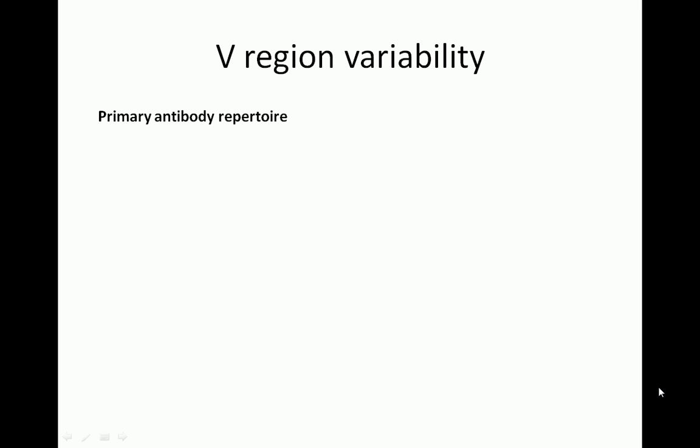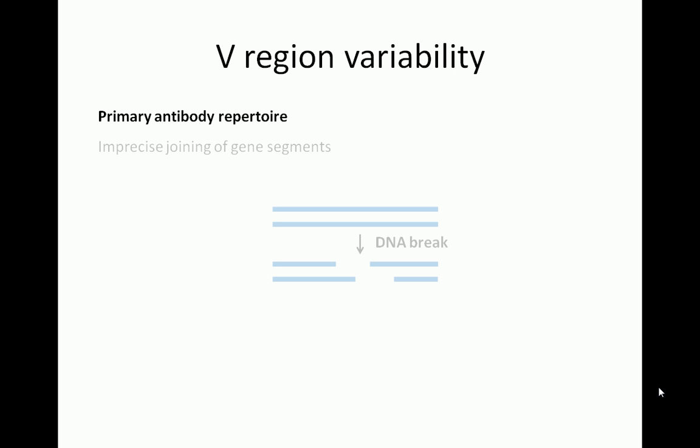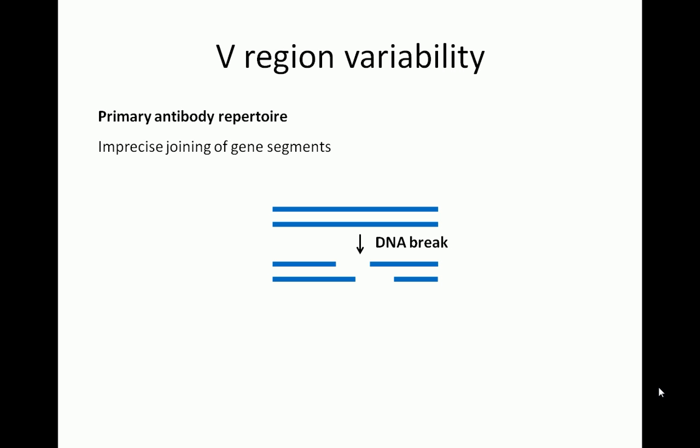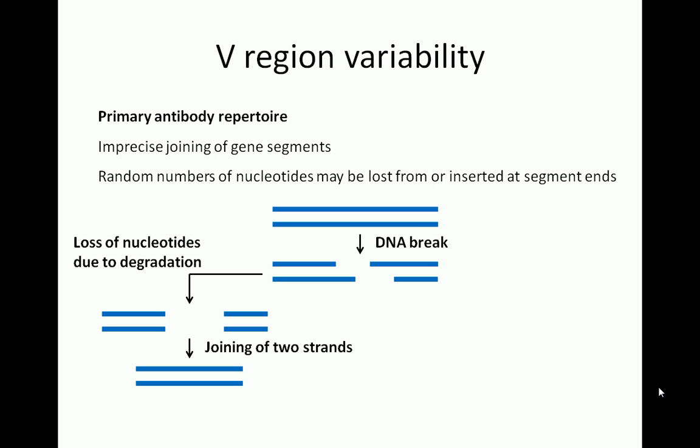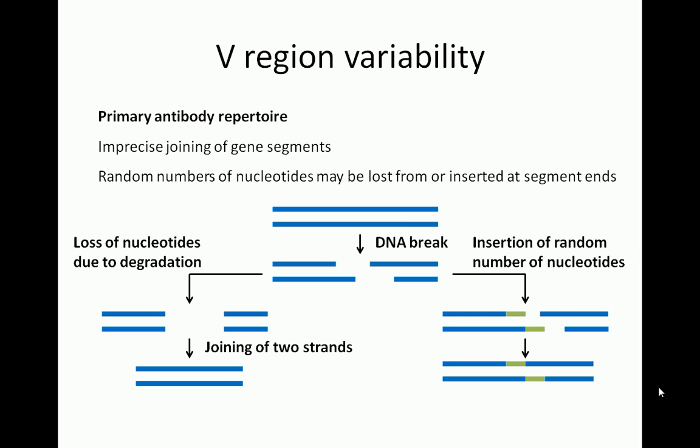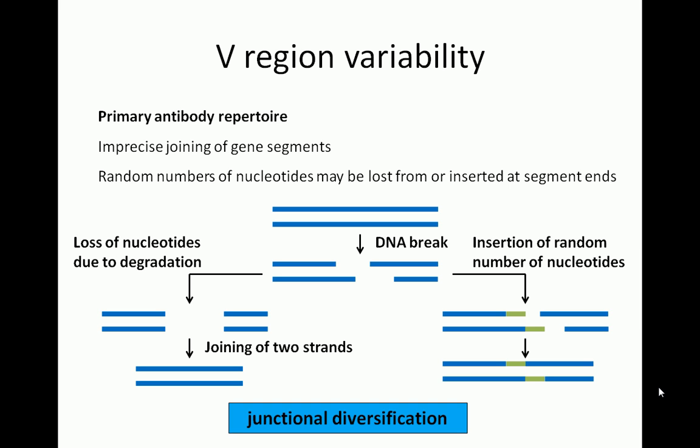The diversity of the primary antibody repertoire is increased by increasing variability in the V region. B cells create variability in the V region of light and heavy chains through imprecise joining of gene segments. This can cause the loss of random numbers of nucleotides from the ends of individual gene segments. Sometimes, a random number of nucleotides may be inserted as well. This process is called junctional diversification.